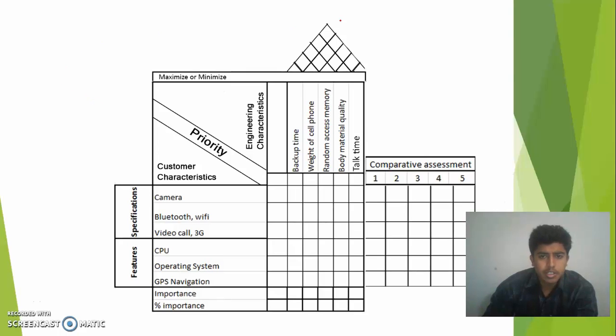I have already made this layout and I've made this according to a mobile company. Let's call it Far Away. And we are going to make the House of Quality according to it. The customer characteristics are: camera, bluetooth, wi-fi, video call, cpu, operating system, navigation. With respect to features are these three: specification, camera, bluetooth and video call.